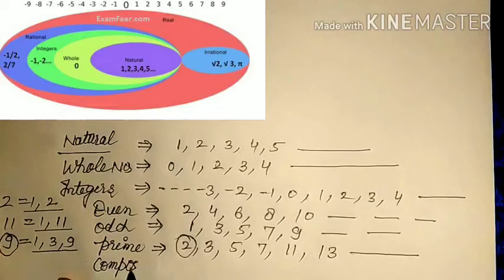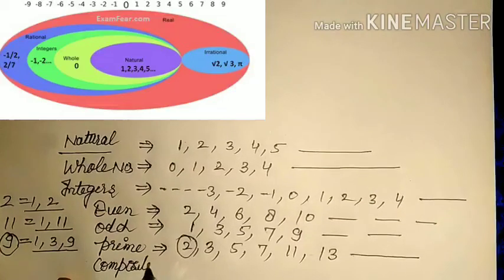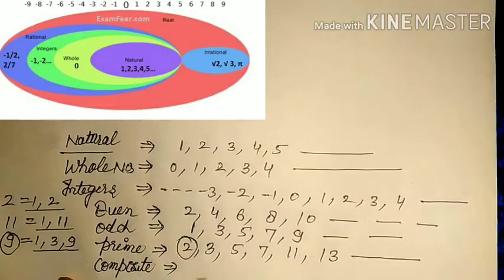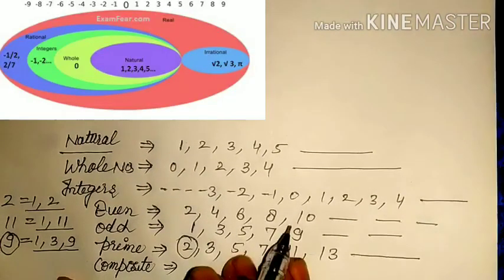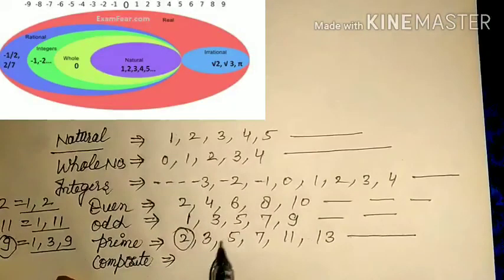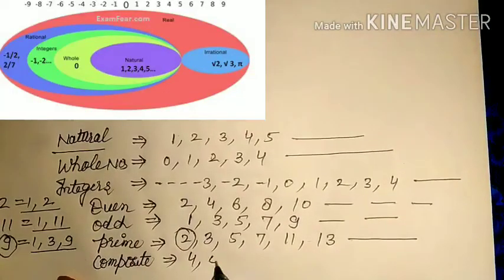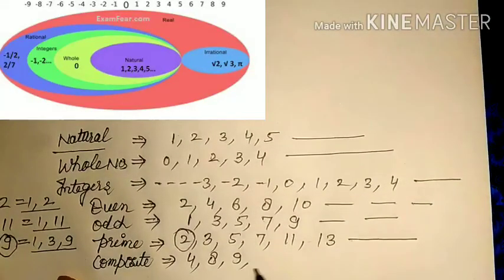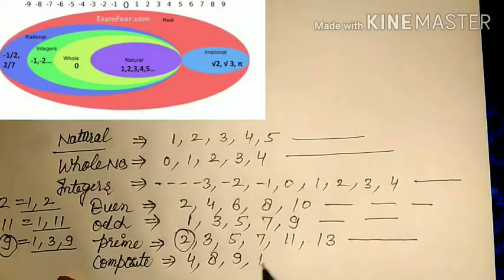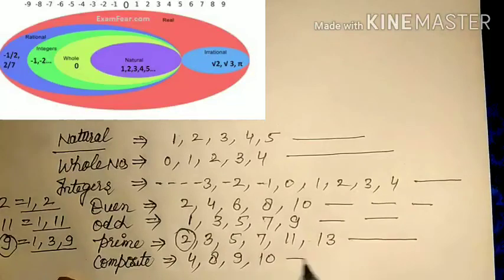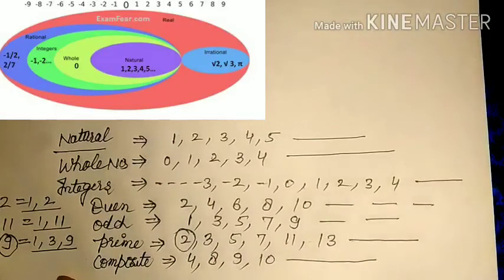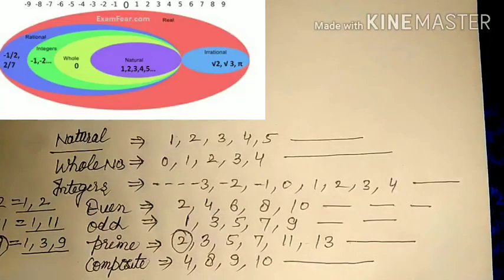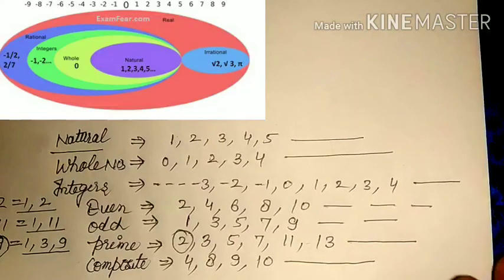A composite number is a number that has more than two factors — for example, 4, 8, 9, 10. These numbers are divisible by more than just one and themselves. Such numbers are known as composite numbers.